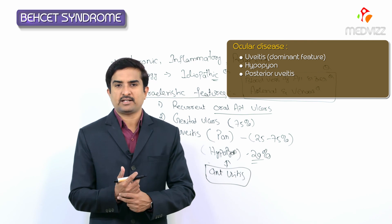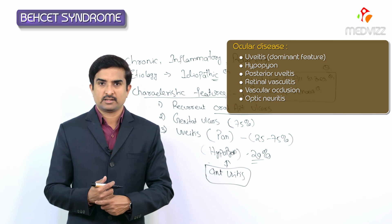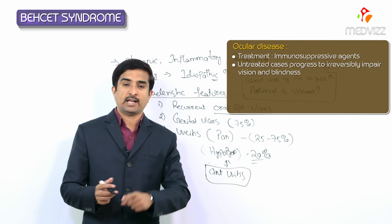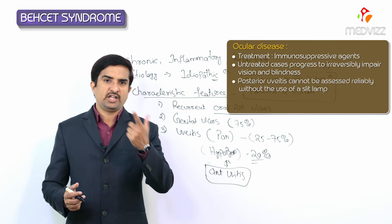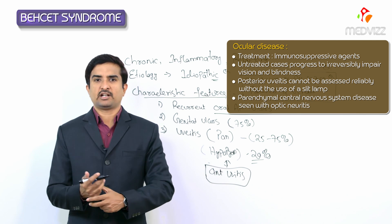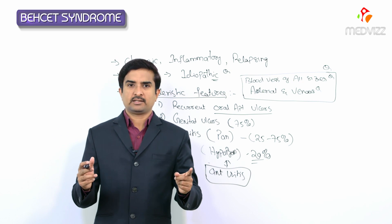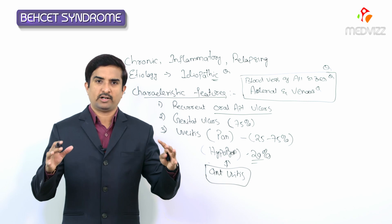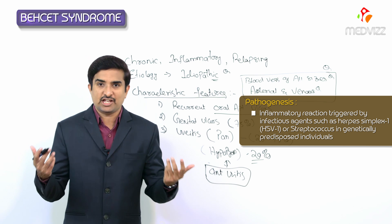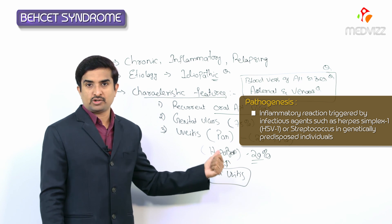Posterior uveitis, retinal vasculitis, vascular occlusion, and optic neuritis all require systemic immunosuppressive treatment and may irreversibly impair vision, progressing to blindness if untreated. The pathogenesis is thought to involve an inflammatory reaction triggered by an infectious agent such as herpes simplex 1 or streptococcus in genetically predisposed individuals.